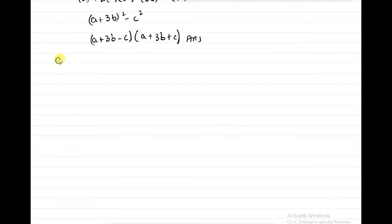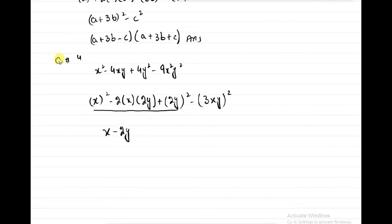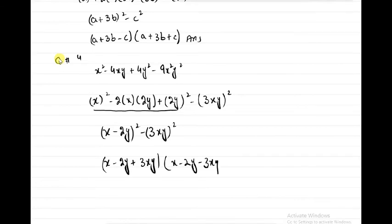Question number 4: x² - 4xy + 4y² - 9x²y². We write this as x² - 2·x·2y + (2y)² - (3xy)², which is (x-2y)² - (3xy)². Since there is a negative sign between two squares, this factors as (x-2y+3xy)(x-2y-3xy). That is the answer.